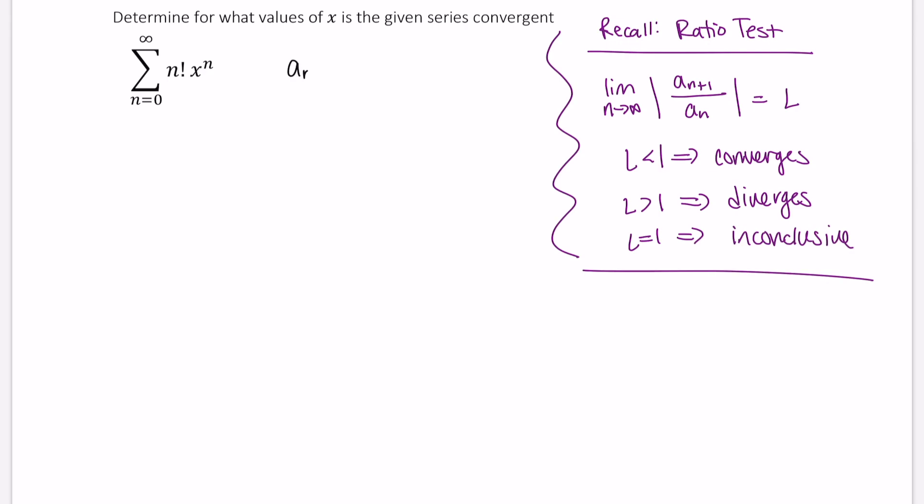Okay, so a sub n is equal to n factorial times x to the nth power.